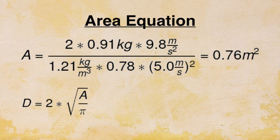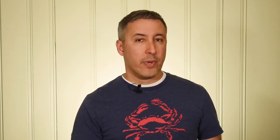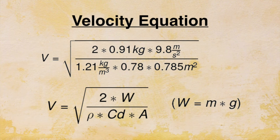Therefore, diameter — which is 2 times the square root of area over pi — is 0.98 meters. Plugging this back into the terminal velocity equation to double check using a 1 meter parachute, we get mass equals 0.91 kilograms, gravity equals 9.8 meters per second squared, air density equals 1.21 kilograms per meter cubed, drag coefficient equals 0.78, and surface area equals 0.785 meters squared. Therefore terminal velocity equals 4.9 meters per second, which is close to our target terminal velocity.